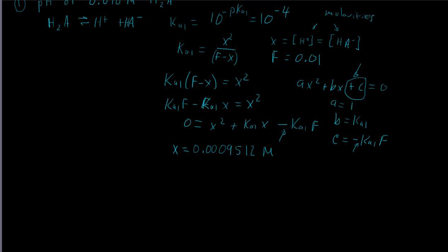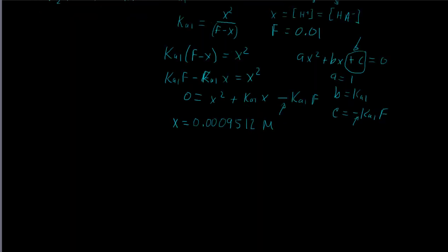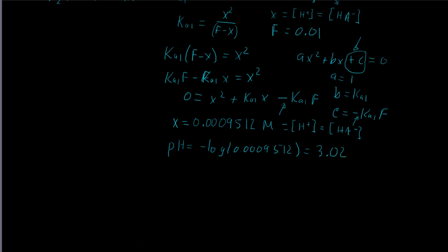That value is the molarity of our H+ concentration, and it also equals our HA- concentration. To find the pH, we take the negative log of that number and get a pH of 3.02.